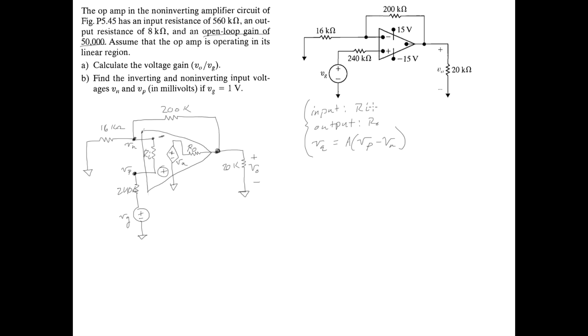And our Ri value is given as 560k, and our Rout value is given as 8k, and of course, ohms.